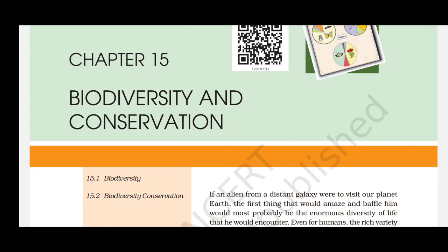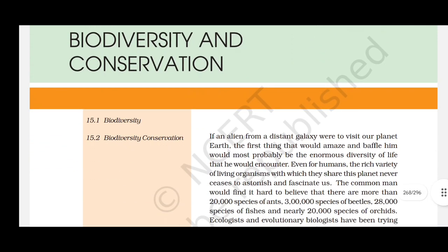Chapter 15: Biodiversity and Conservation. If an alien from a distant galaxy were to visit our planet Earth, the first thing that would amaze and baffle him would most probably be the enormous diversity of life. Even for humans, the rich variety of living organisms never ceases to astonish. The common man would find it hard to believe that there are more than 20,000 species of ants, 3 lakh species of beetles, 28,000 species of fishes and nearly 20,000 species of orchids.